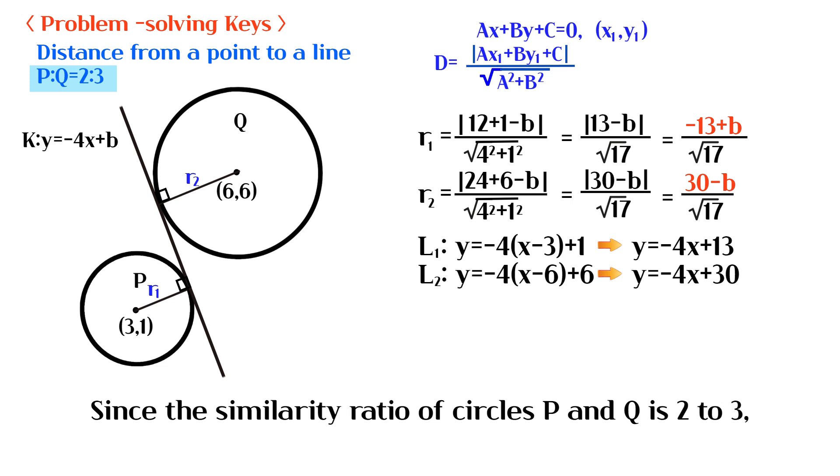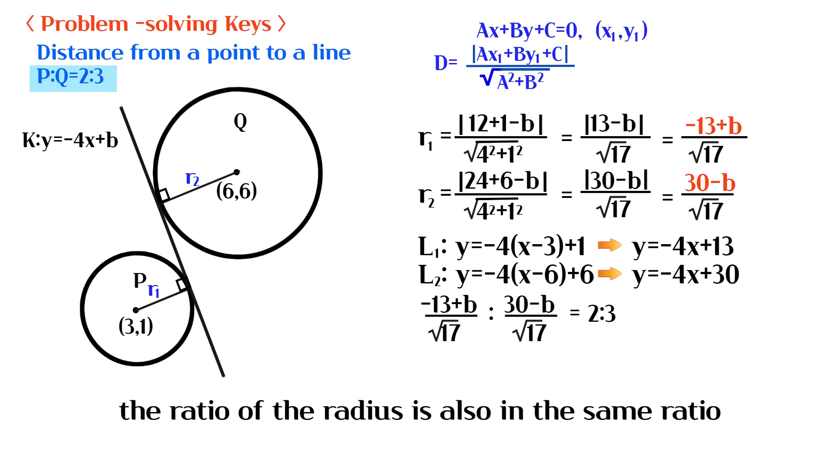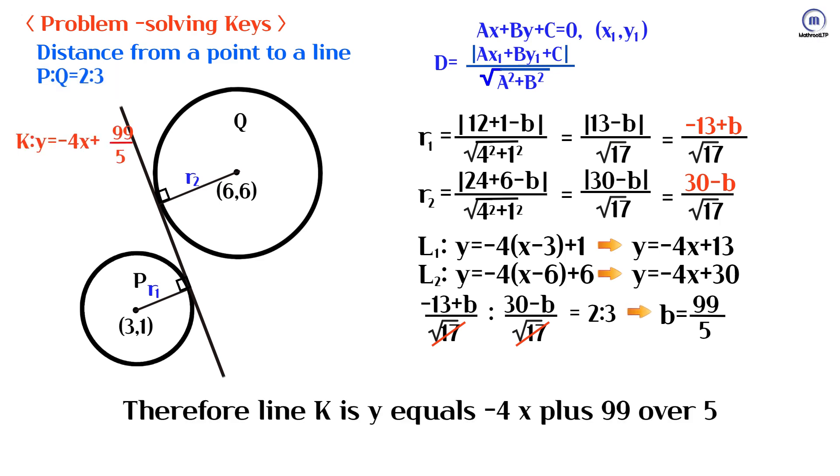Since the similarity ratio of circles P and Q is 2 to 3, the ratio of the radius is also in the same ratio. Therefore line K is y equals negative 4x plus 99 over 5.